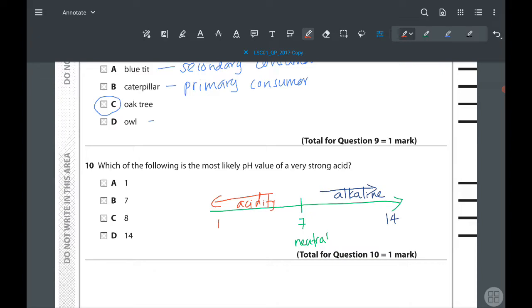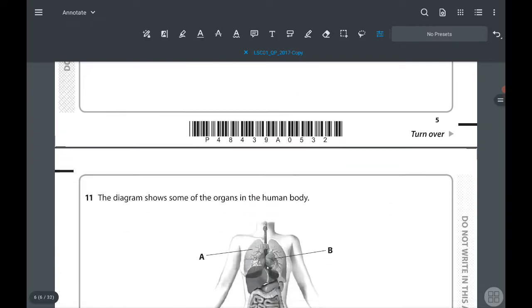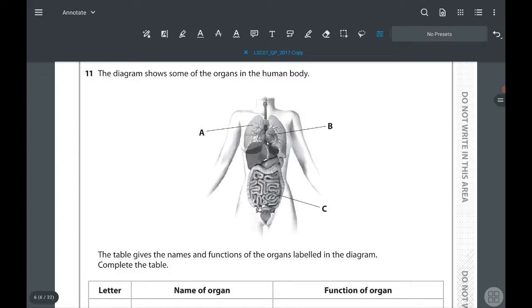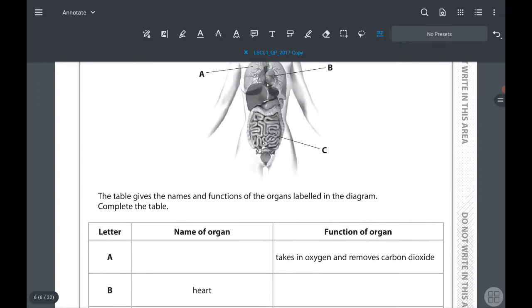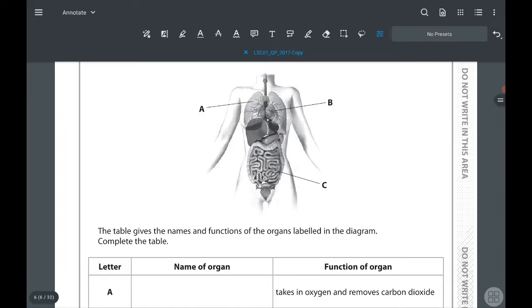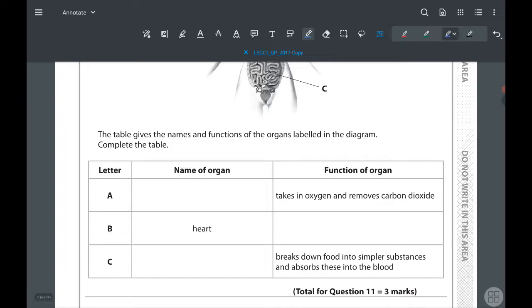Next question: the diagram shows some organs in the human body. The table gives the names and functions of the organs labeled in the diagram. Complete the table. A is labeling lungs, B is heart, C is small intestine. For lungs, it takes in oxygen and removes carbon dioxide. For small intestine, it breaks down food into simple substances and absorbs this into the blood. So for heart, we can say it pumps blood.